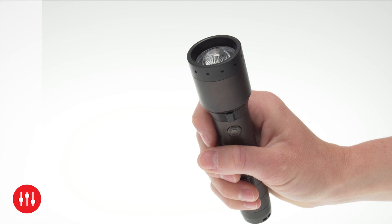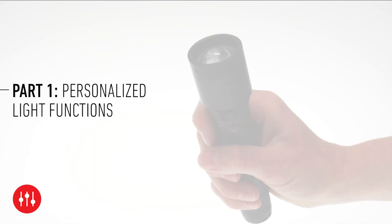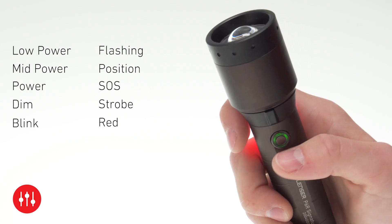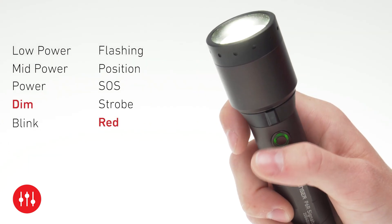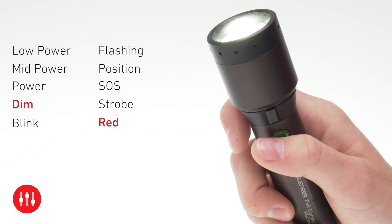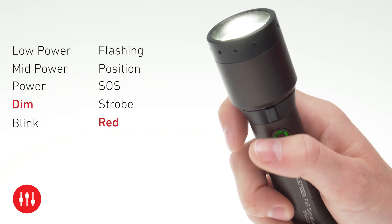You can use the programming mode to determine how your LED Lenser's light should shine — for example, which light functions are available in which order, exactly as you need them and independent of the factory settings. Let's say you want to start with red light, then set light at a dimming level of your choice, and finally set blink light.